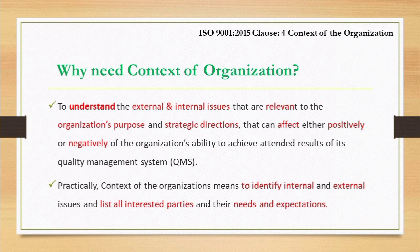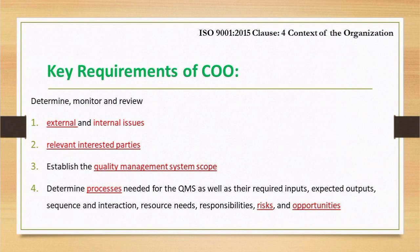Practically, context of the organization means identifying the internal and external issues, and listing all the interested parties along with their needs and expectations. There are four key requirements of context of the organization. It requires you to: determine, monitor, and review external and internal issues; identify relevant interested parties and their expectations and needs; and establish the quality management system scope.